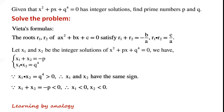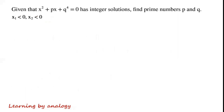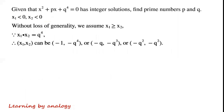So x1 is less than 0 and x2 is less than 0. Without loss of generality, we assume x1 is greater than or equal to x2. Because x1 times x2 equals q to the power of 4.